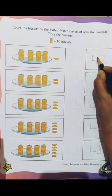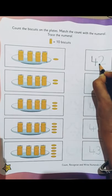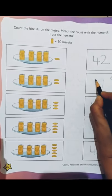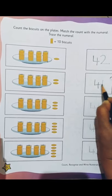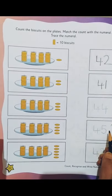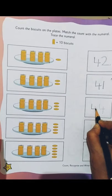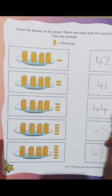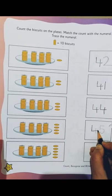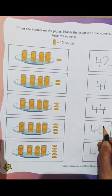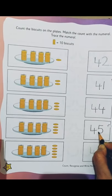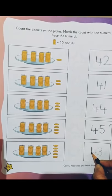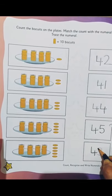4, 2, 42. 4, 1, 41. 4, 4, 44. 4, 5, 45 and then 4, 3, 43.